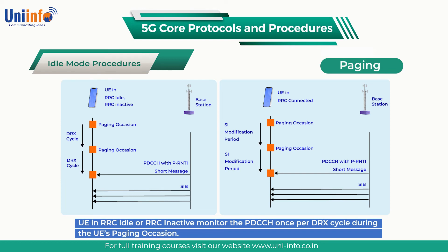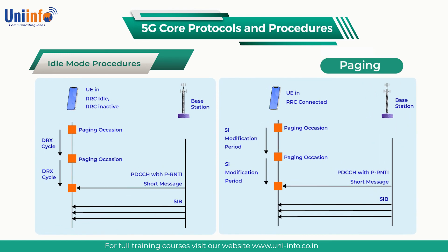UEs in RRC connected monitor the PDCCH once per system information modification period during any paging occasion, assuming the UE has been configured with a common search space to monitor paging within the active bandwidth part. If the UE is paged with a system information change notification, then the UE reacquires the system information from the start of the next modification period. If the UE is paged with an ETWS notification, then the UE immediately reacquires SIB1 and checks for scheduling information applicable to SIB6 or SIB7 for ETWS, and SIB8 for CMAS. The UE then proceeds to acquire the relevant public warning system information.